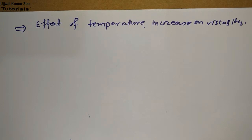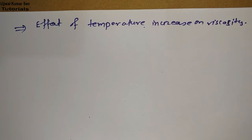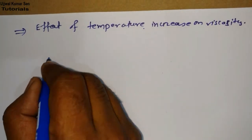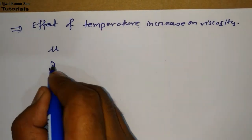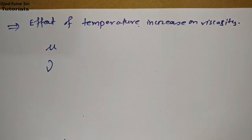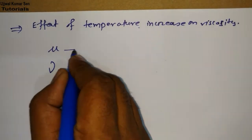Today in this tutorial you are going to study about the effect of temperature on viscosity. Till now we have discussed a lot about viscosity. We have two types of viscosity: mu, which is the coefficient of dynamic viscosity, and kinematic viscosity. Those things we have already studied, so I will not repeat them here.